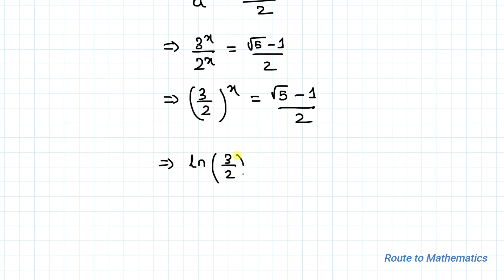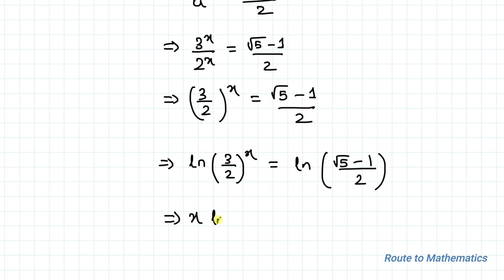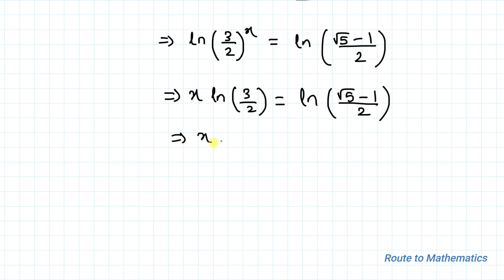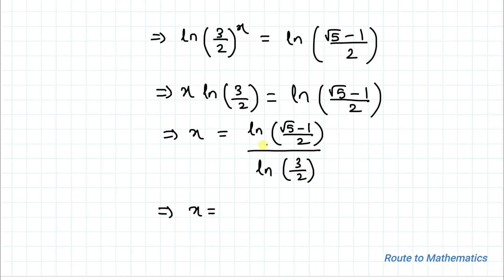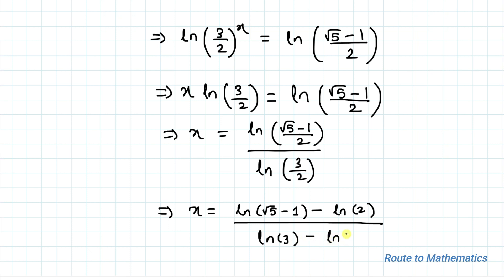Taking the natural log of both sides: ln((3/2)^x) = ln((√5 − 1) / 2). Applying the logarithm power rule: x · ln(3/2) = ln((√5 − 1) / 2). Therefore x = ln((√5 − 1) / 2) divided by ln(3/2), which by the logarithm division rule gives x = (ln(√5 − 1) − ln 2) / (ln 3 − ln 2). This is our answer.